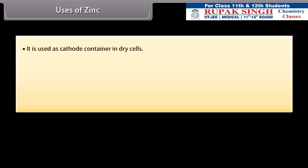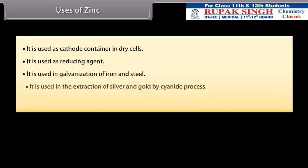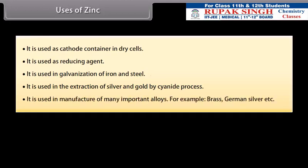Uses of zinc. It is used as cathode container in dry cells. It is used as reducing agent. It is used in galvanization of iron and steel. It is used in the extraction of silver and gold by cyanide process. It is used in manufacture of many important alloys. For example, brass, german silver etc.